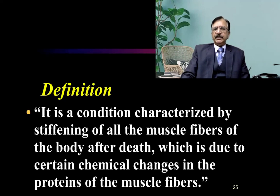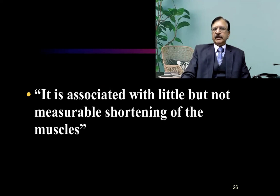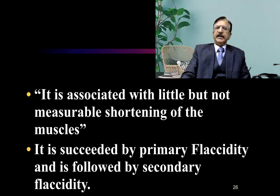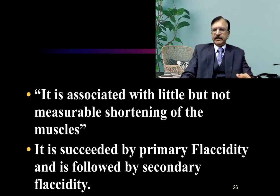By definition, it's a condition characterized by stiffening of all the muscle fibers of the body after death, which is due to certain chemical changes in the proteins of the muscle fibers. It is associated with little but not measurable shortening of the muscles. It is preceded by primary flaccidity and is followed by secondary relaxation, that is secondary flaccidity.